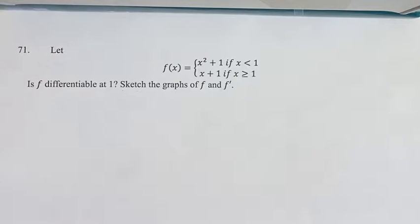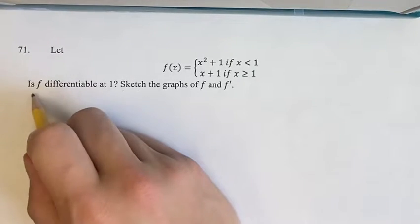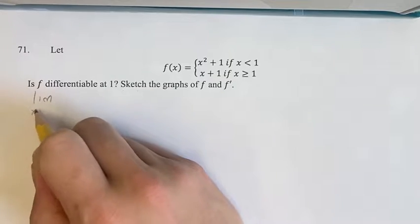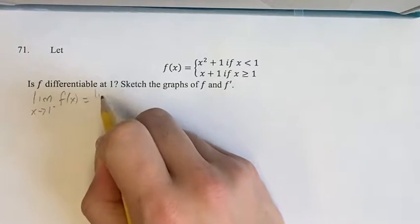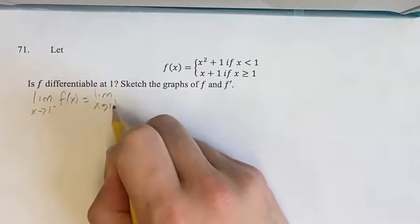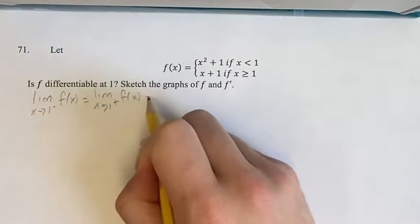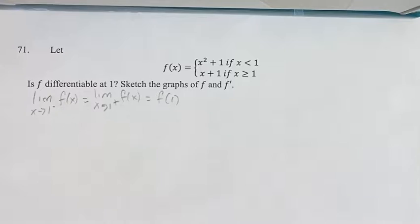So firstly, we're going to have to find if it's continuous, since that's a prerequisite for it being differentiable. We should state that the limit as x goes to 1 from the left of f of x is equal to the limit as x goes to 1 from the right of f of x, and both of these are actually equal to the value of f at 1.